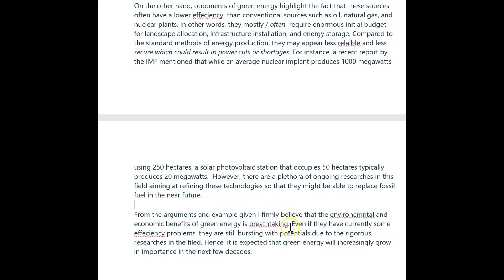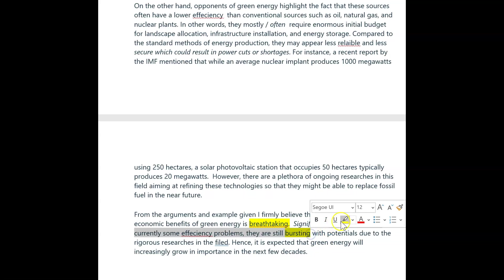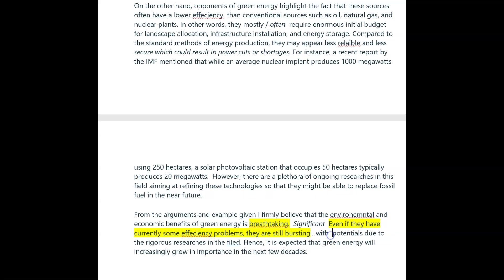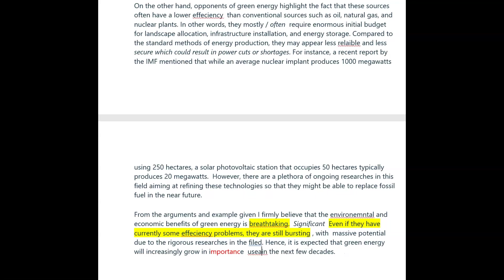I firmly believe environmental significance is significant — I love that word, but it's not really appropriate for academic writing. I'd use 'significant,' which is a much stronger, more academic word. Use that word, it's a great word — useful for task one as well sometimes. Even if they currently have some efficiency problems, they're still — again, nice word but wrong context, don't use it here. I would tidy this up, take that out — 'significant with massive potential.' Maybe not 'importance' — cautious on that word, it doesn't always work in usage. And 'prevalence' — they used the word 'prevalent' at the beginning, but you could use 'prevalence' as a noun. That'd be quite cool at the end there.